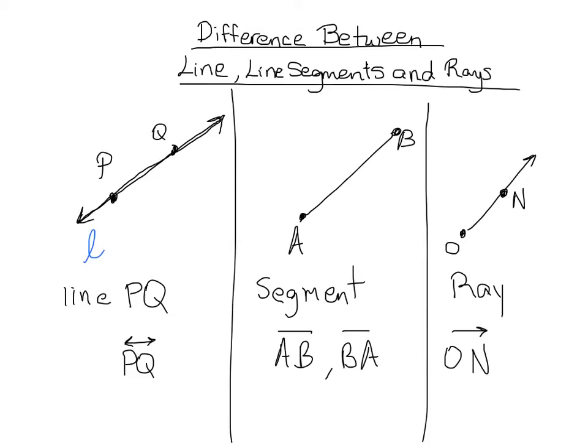Alright, we could not write NO. That's kind of funny that the word no came up there. But we could not write NO because our ray, our ray is going from here infinitely in that direction. It's not going from N infinitely in that direction. So we have to go from the endpoint O and name it ON in that direction. Alright, so that pretty much covers it with the differences between a line, a line segment, and a ray.